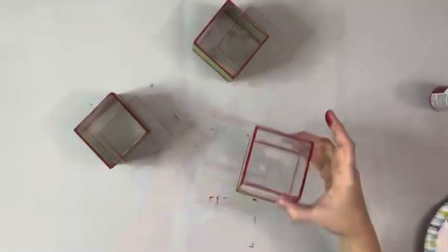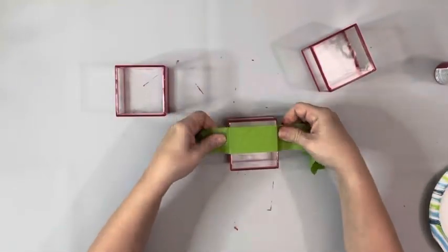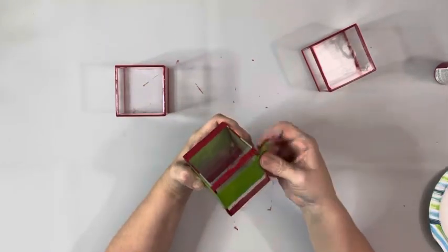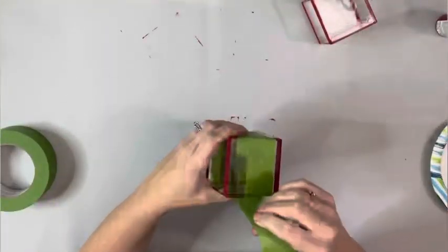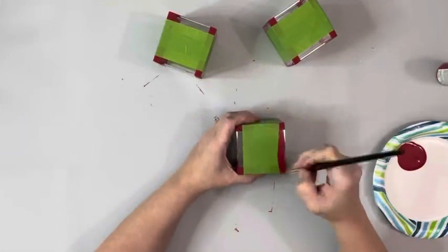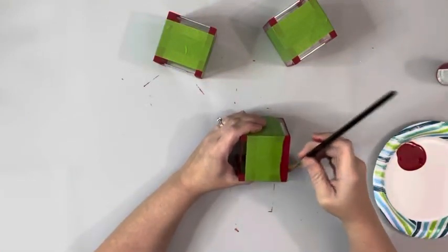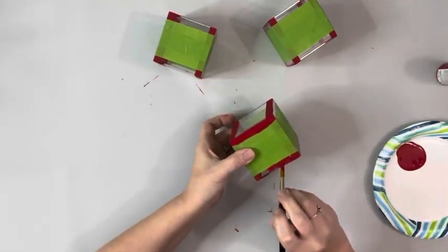Once that area was done and dry, I removed the tape and then did it in the opposite direction. So what I'm doing is making a red border around each side of each of the cubes.